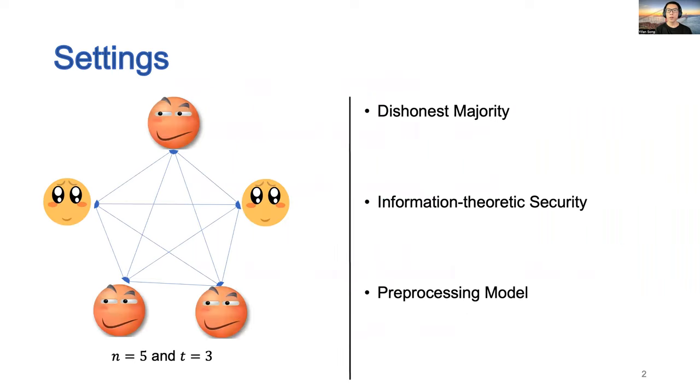In this work, we consider the dishonest majority setting and information theoretic security. To overcome the known impossibility results, we consider the preprocessing model.